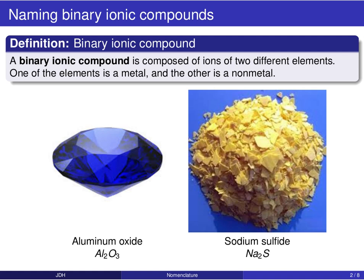Let's start off by focusing on binary ionic compounds. A binary ionic compound is composed of ions of two different elements, where one of the elements is a metal and the other is a non-metal. One example is the aluminum oxide formula provided here, which is the formula for the gemstone sapphire.